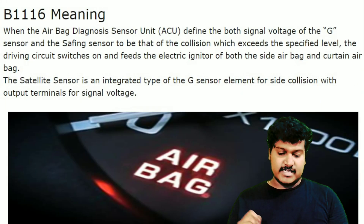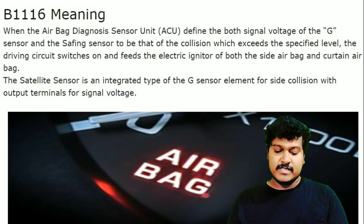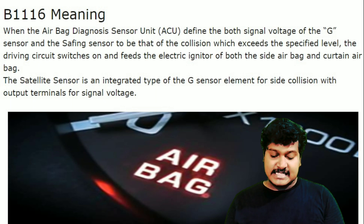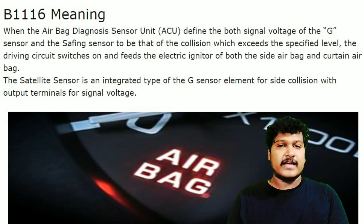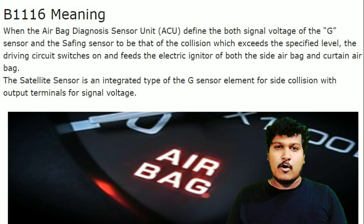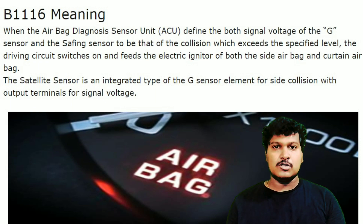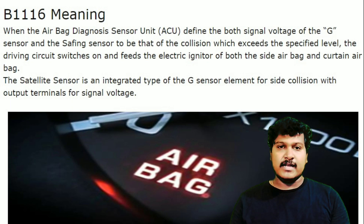The other DTC is B1116, which also deals with the airbag. When the airbag diagnosis sensor unit — that is the ACU — detects that both the signal voltage of the G-sensor and the safing sensor for the collision exceeds a specified level, and that exceeds because of low voltage, it triggers this DTC. Even in a laboratory, low voltage issues are tested for these kinds of DTCs, and all these low voltage issues are inputs to these kinds of codes.